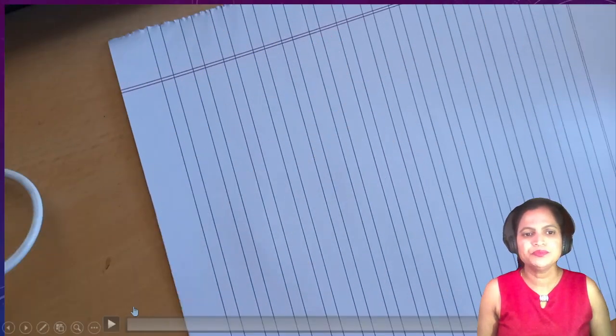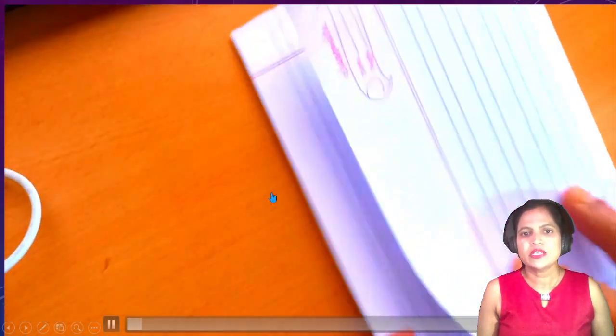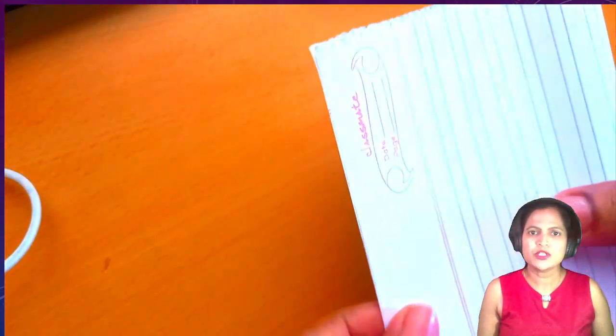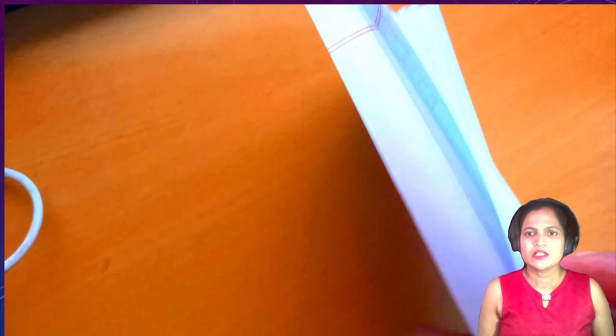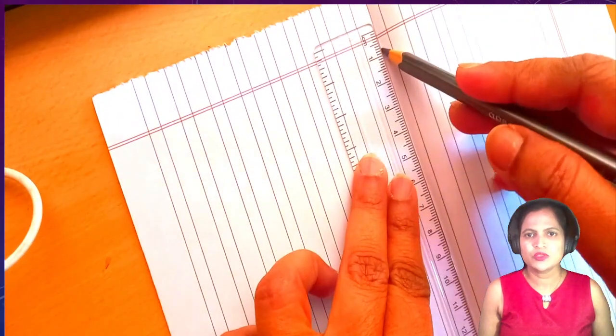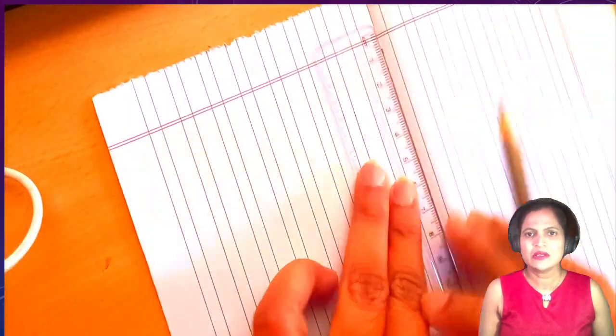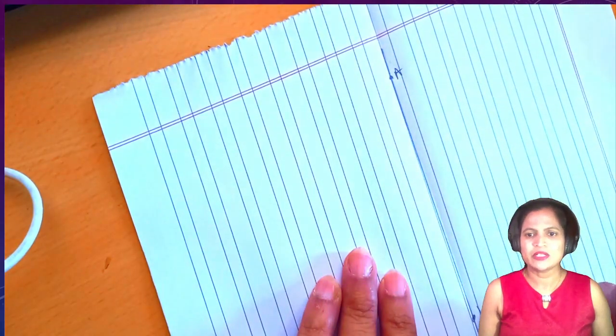Take a paper and fold it. Exactly the edge points of this paper should lie on each other exactly, and squeeze the paper here. You get a line. Take a pencil and scale. Use the help of the ruler. Draw a line here. Name it as AB. Okay, AB line segment it is.